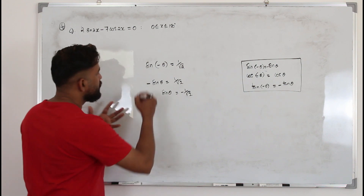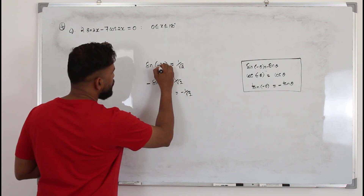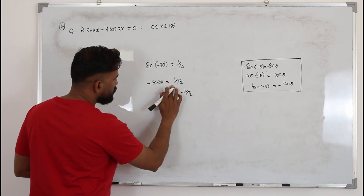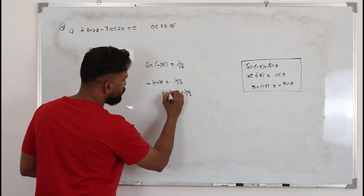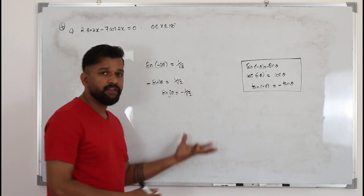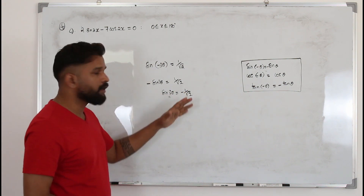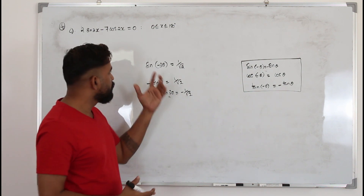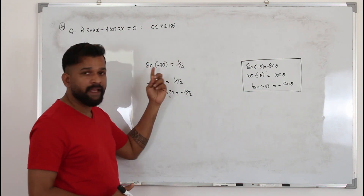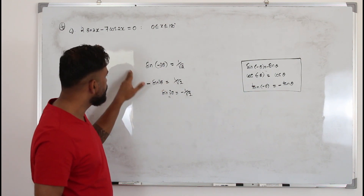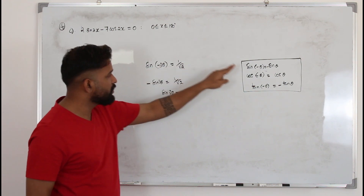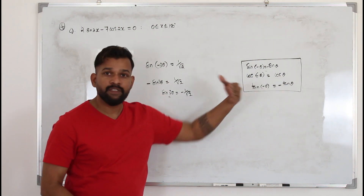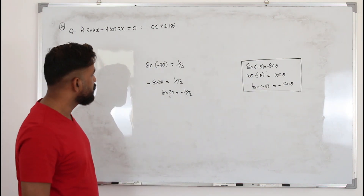If instead of -θ you have -3θ, you write it as -sin 3θ, so sin 3θ = -1/2. That's a harder trigonometric equation Type 1 and you know how to solve it. Don't worry about multiplying the limits by a negative number — just put the negative sign outside for sin or tan. For cos, cos(-θ) = cos θ, so it stays positive.